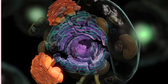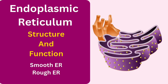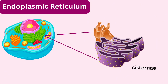Welcome to Applied Biology. In today's video I am going to discuss endoplasmic reticulum or ER. The endoplasmic reticulum is a complex network of membranes that includes flattened sacs and tubules called cisternae. These membranes extend throughout the cytoplasm forming an interconnected system.